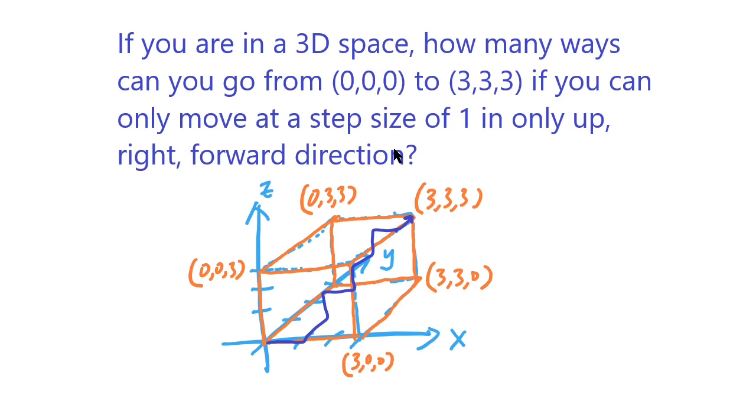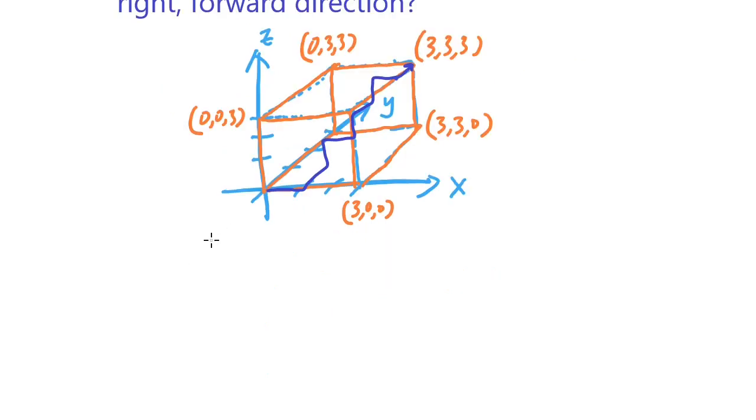But it turns out this problem can be solved by very simple permutation algebra. So the three directions, going to the right is basically in the x direction.